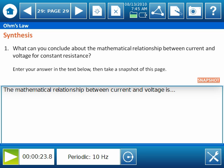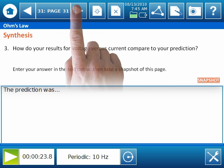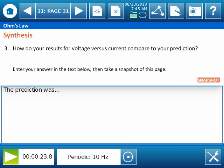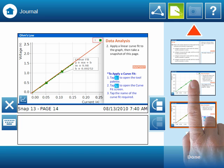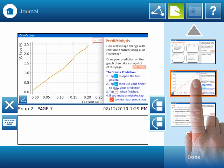The synthesis questions summarize and relate the lab experience back to classroom learning and real world experience. They also give students a chance to compare their predictions to their actual data. To do that, let's use the journal. If we wanted to compare our actual data to our prediction, we can do that here.